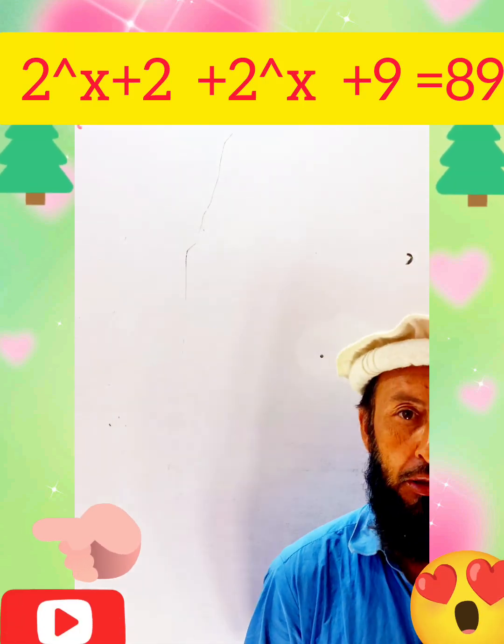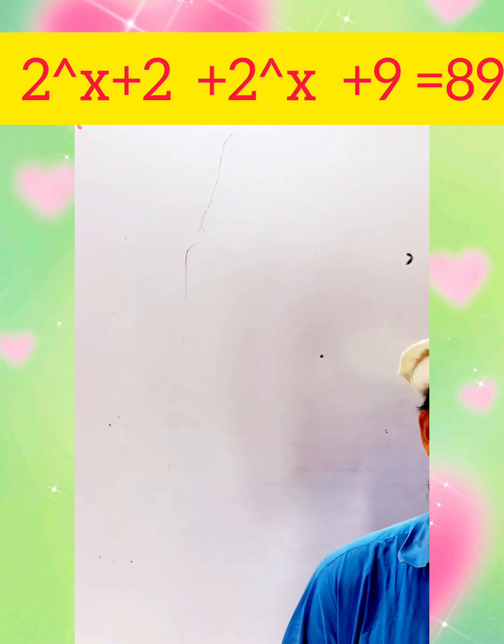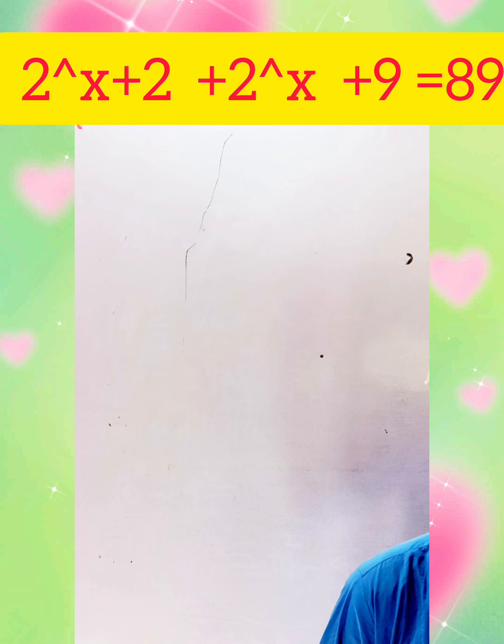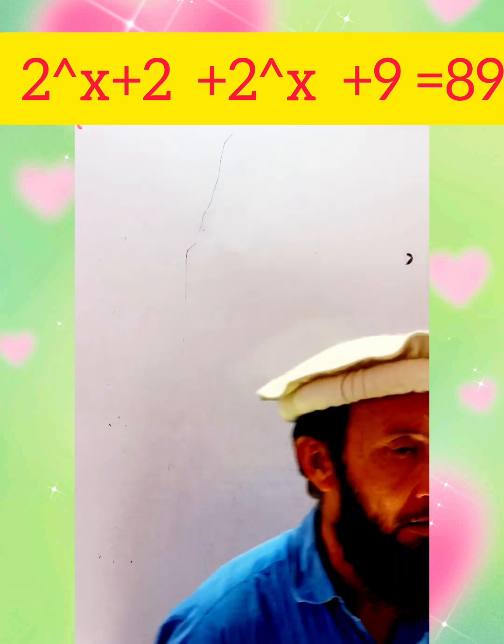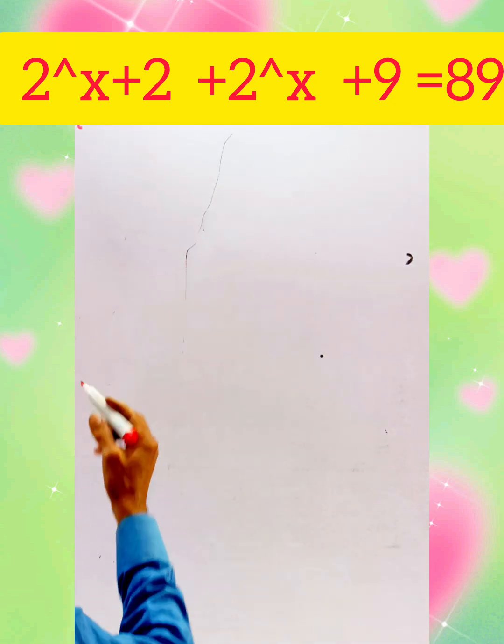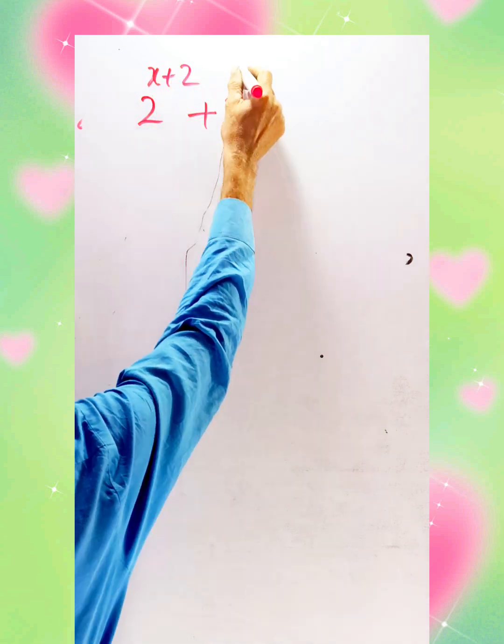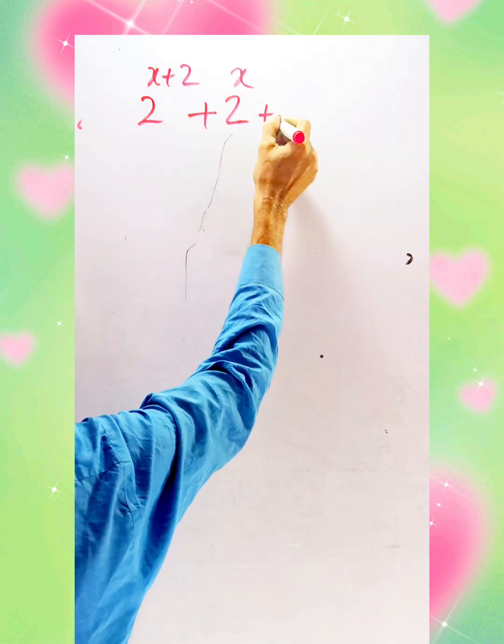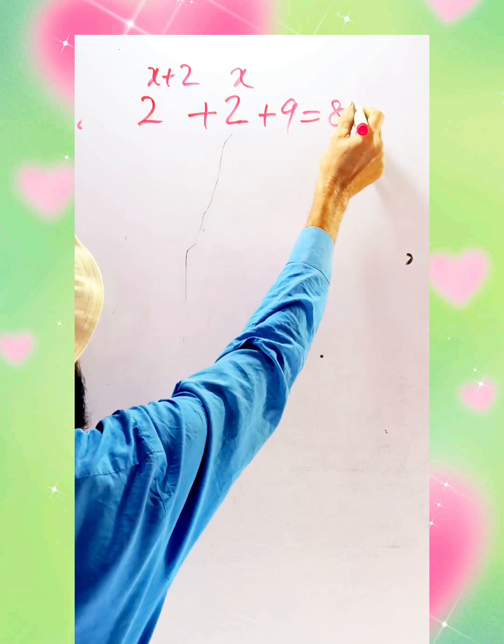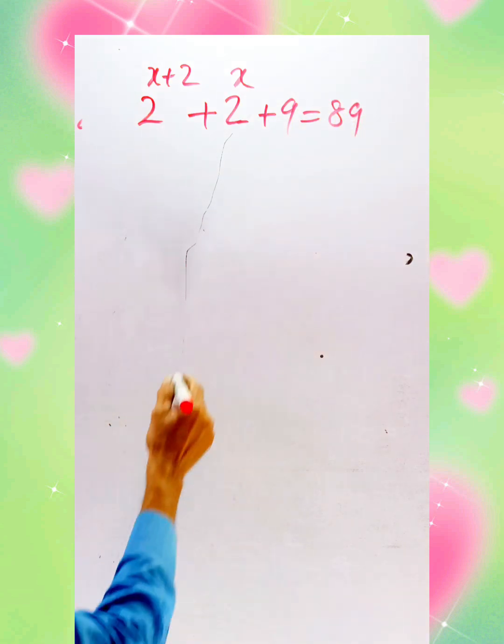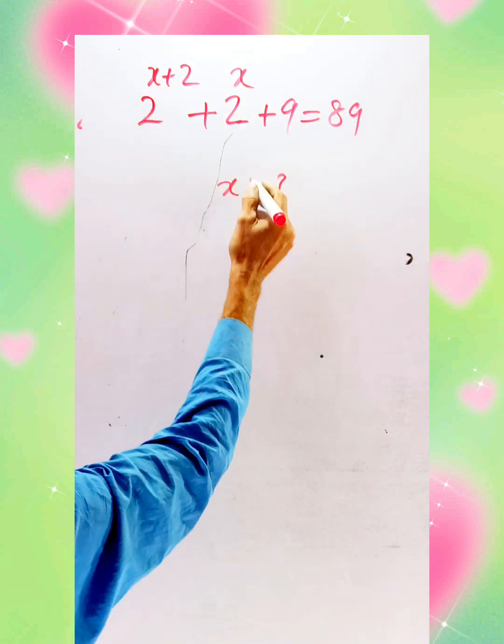Today we have a new exponential equation, a very interesting logical question. We need to calculate the value of x from this exponential equation. Look here, we start: 2^(x+2) + 2^x + 9 = 89.